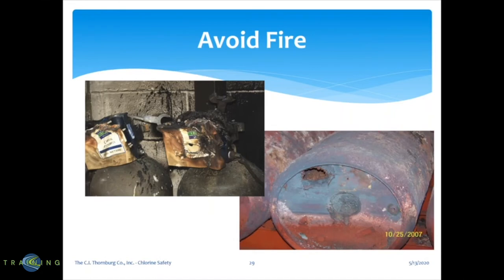This is what can happen with a fire. On the left-hand side you'll see two 150-pound cylinders that were involved in a fire — the fuse plugs melted and they had a 300-pound release of chlorine. On the right-hand side is a ton cylinder involved in a fire where the pressure got so high it blew a big hole in the concave end of the ton cylinder. Just avoid fire as much as possible.